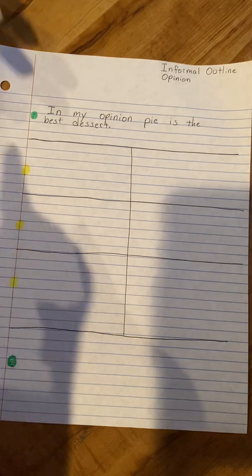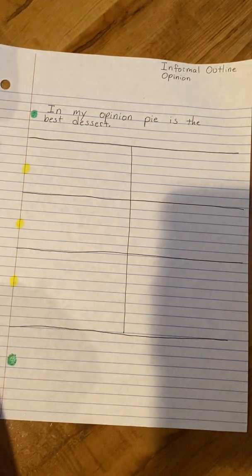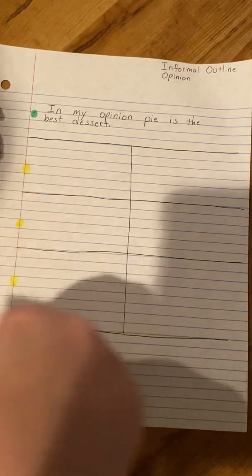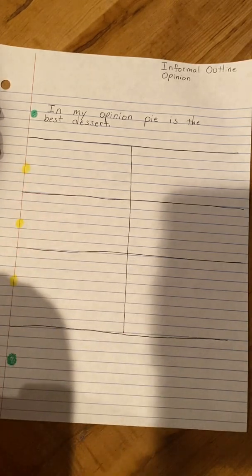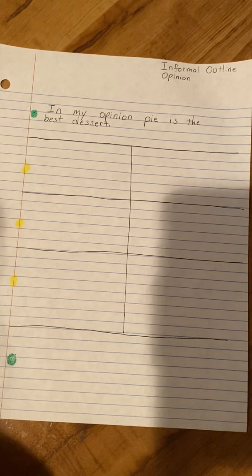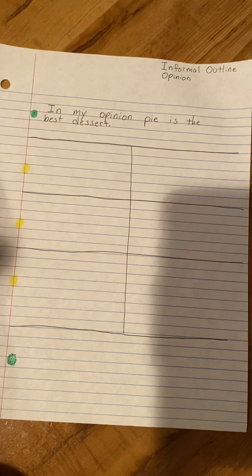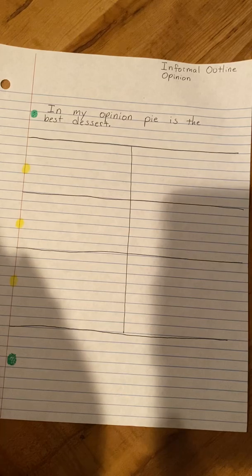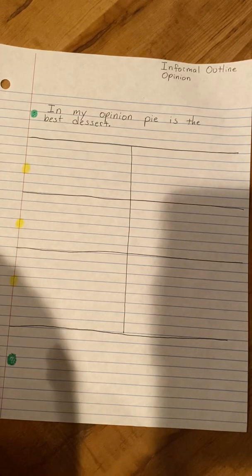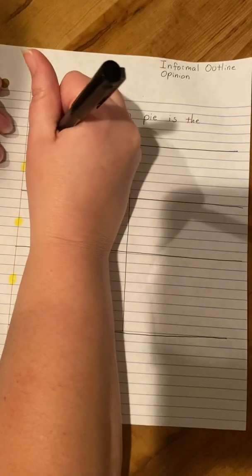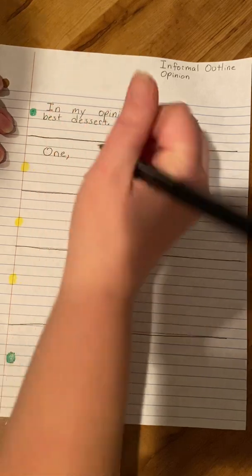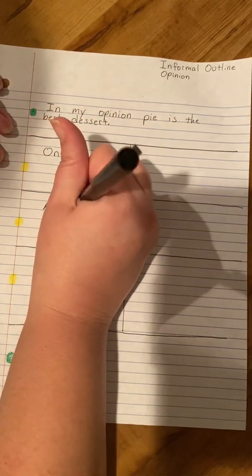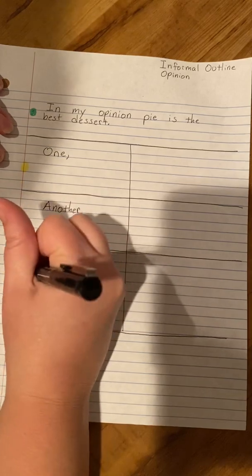When you're starting out your opinion paragraph, you may start it with 'in my opinion.' Now I have my yellows. Just like I would do in my informational writing, I'm going to add in my transition words. What's a transition word? Transition words are words like first, next, last, one, another, finally. And that's what I'm going to use today — one, another, and finally.